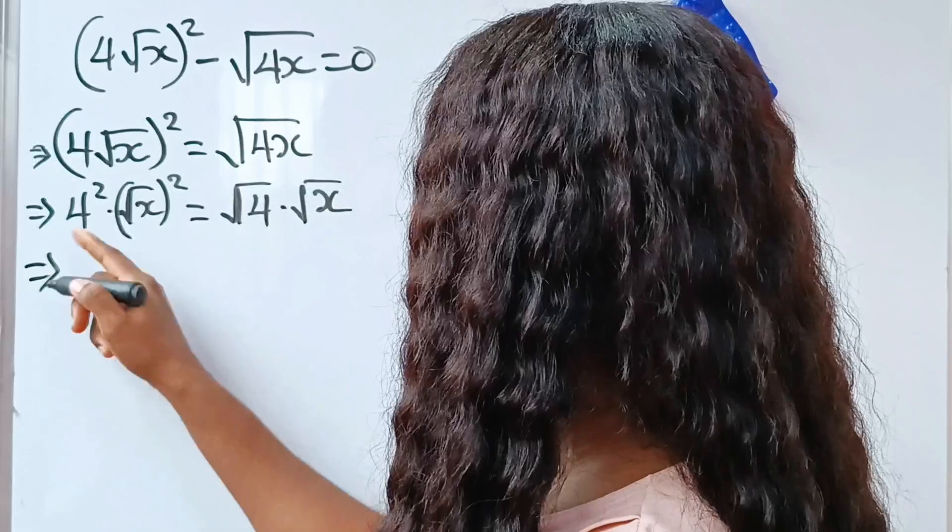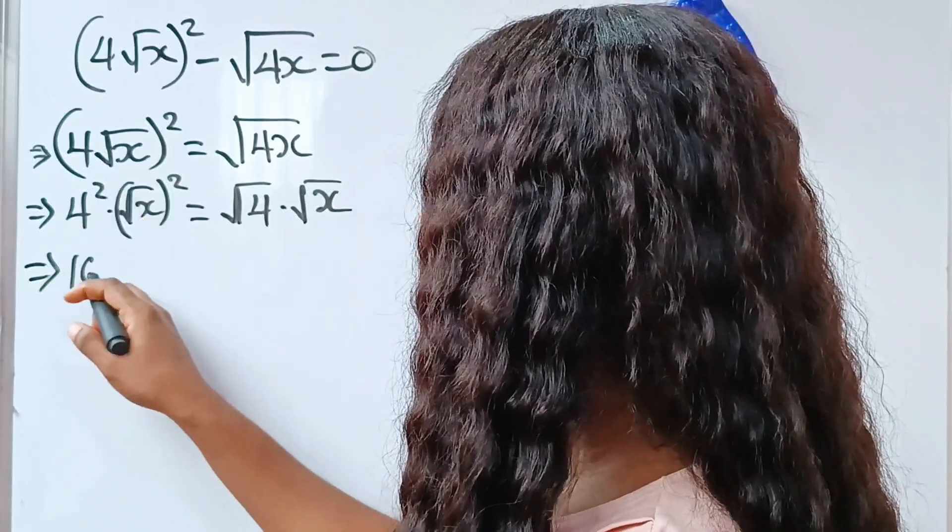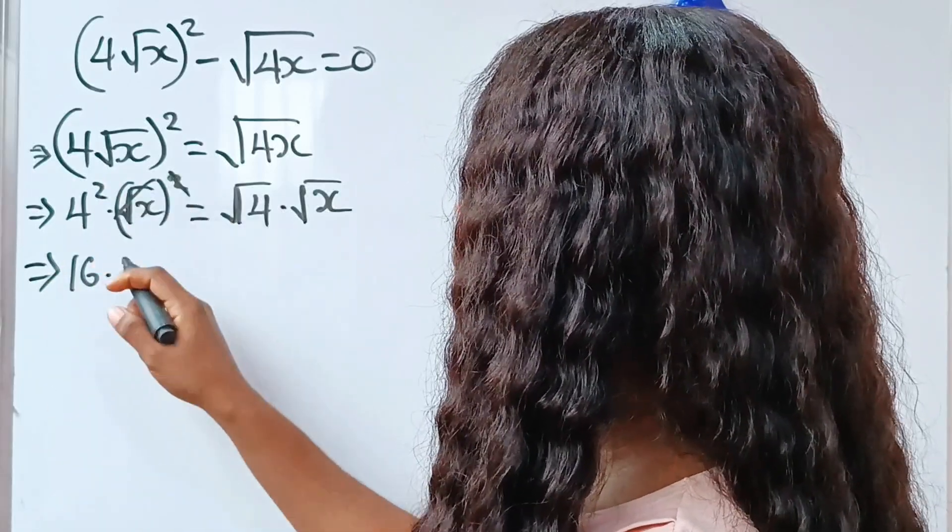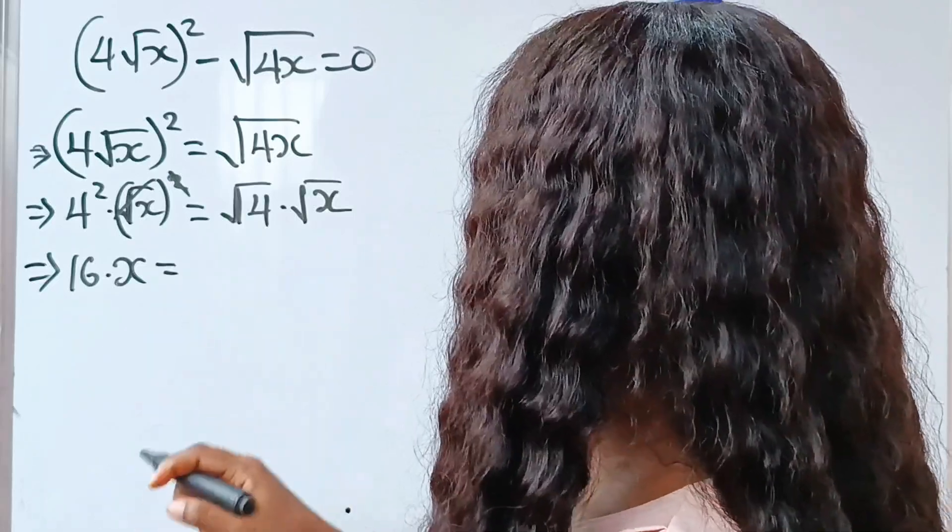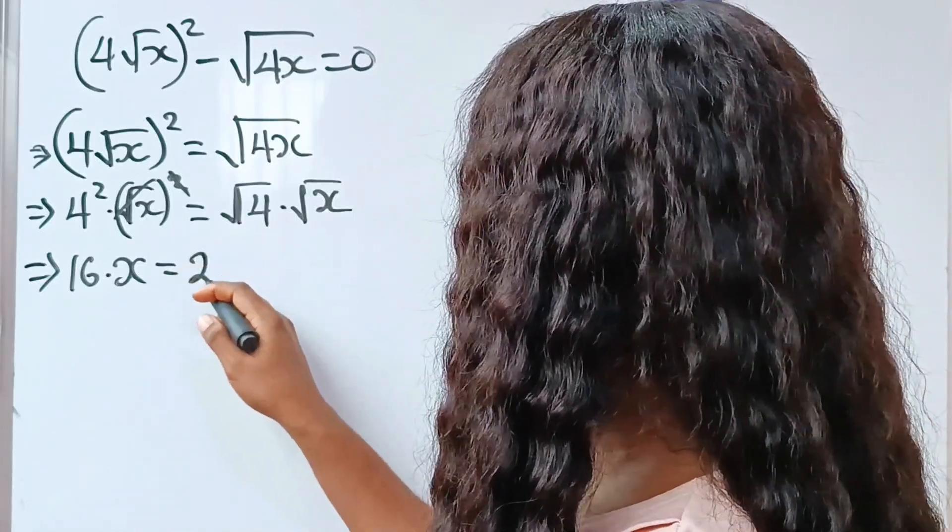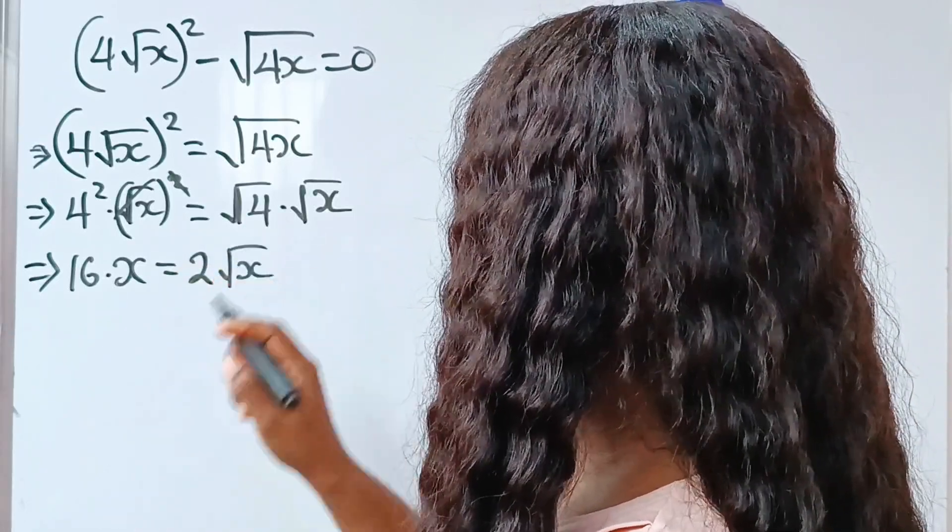So we have 4 squared is 16 multiplied by this, we cancel this, we are left with x. Is equal to square root of 4 is 2, then we have our root x.